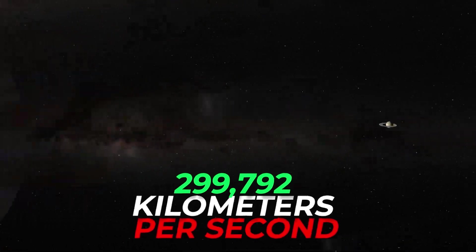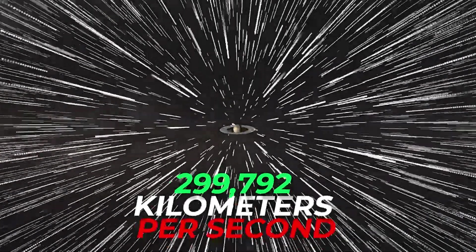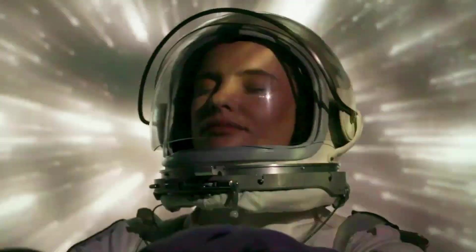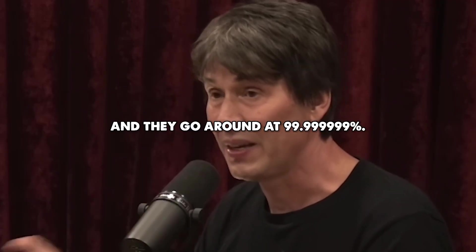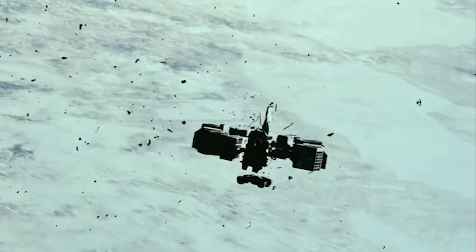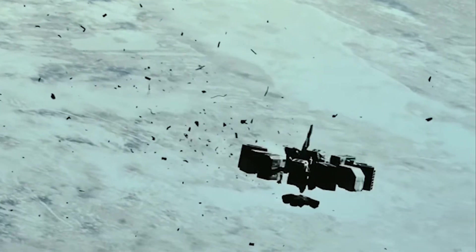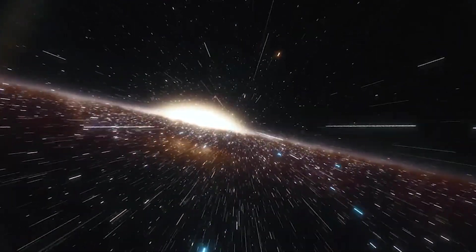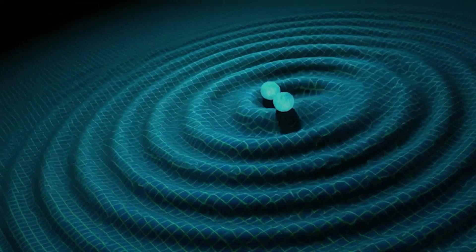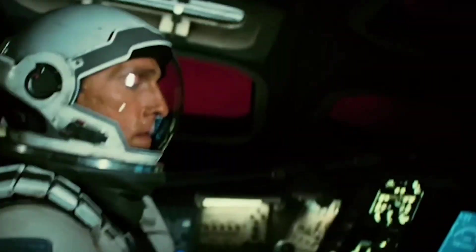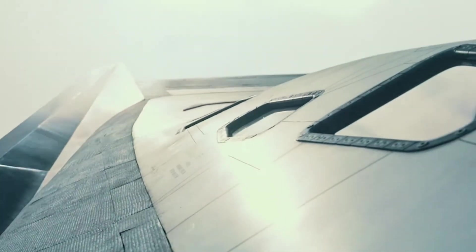It is 299,792 kilometers per second, which isn't just fast. And they go around at 99.999999% the speed of light. It's the absolute speed limit of the universe. Nothing with mass can ever reach it, and nothing can surpass it. Only light itself, made of massless photons, can move at that speed. It's a barrier built into the fabric of reality.